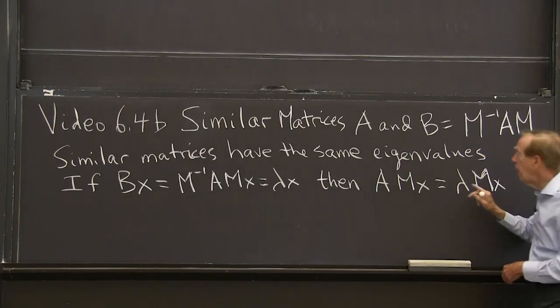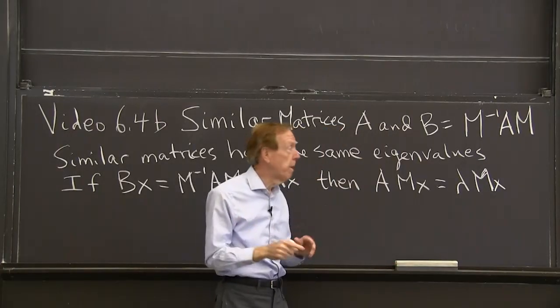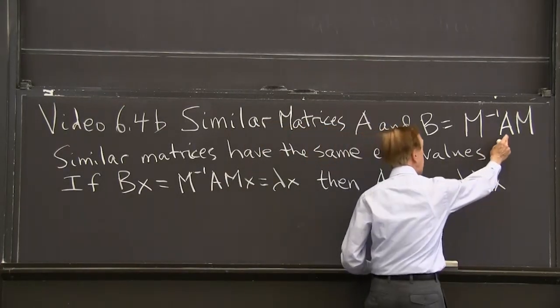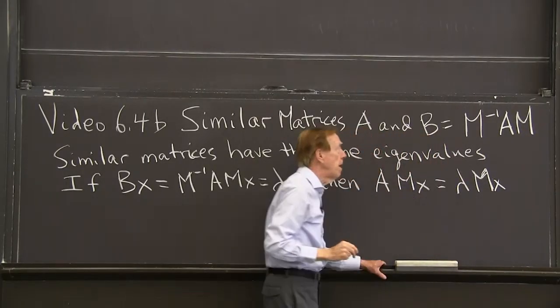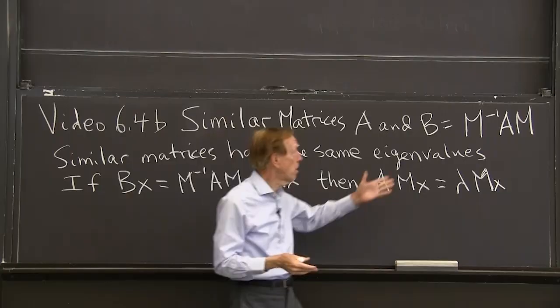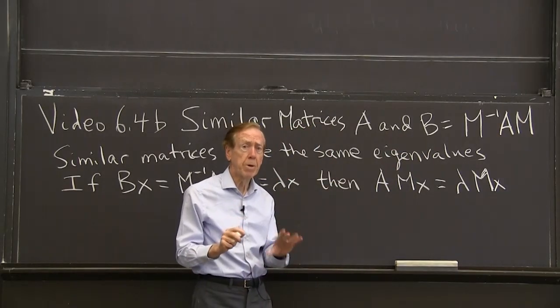Notice this way. It means there's some matrix M, could be any invertible matrix, so that I take A, multiply on the right by M, and on the left by M inverse. That'd probably give me a new matrix, call it B. That matrix is called similar to B.